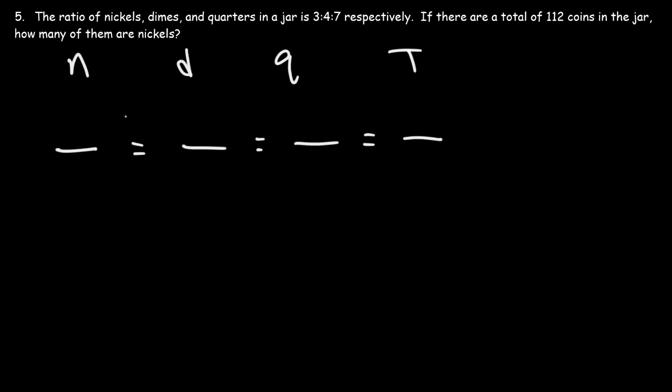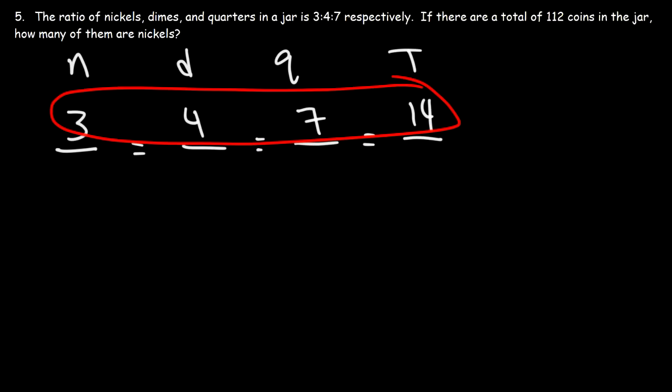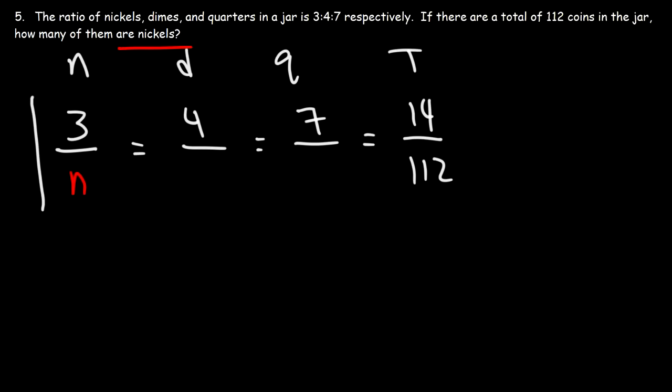So in this case, we're going to have 4 fractions. On top, I'm going to put the ratio. If there are 3 nickels, there's going to be 4 dimes and 7 quarters. In this case, the total number of coins will be 3 plus 4 plus 7. That's going to be 14. So this is based on the ratio. On the bottom, I'm going to put the actual number of coins in the jar. The total number of coins in the jar is 112. Now, I can calculate the number of nickels, dimes, or quarters. It doesn't matter. However, we want to focus on the number of nickels. So we can put an x here, or if you want to, you can put n for nickels. So all I need to do is set this fraction equal to this one. So 3 over n is equal to 14 over 112. Now, let's say if I wanted to calculate the number of dimes, I would put d for dimes and set these two equal to each other and solve for d. Or if I want to solve for the number of quarters, I would set these two fractions equal to each other.